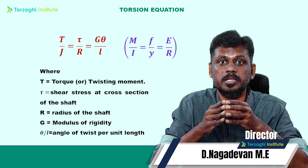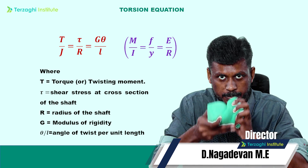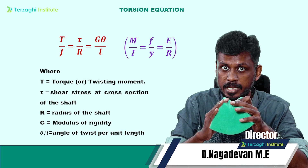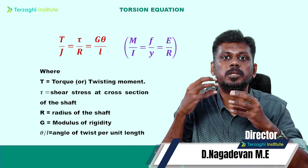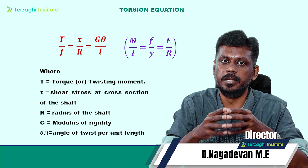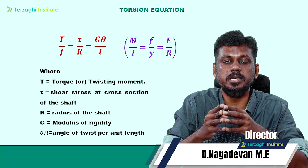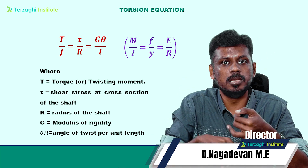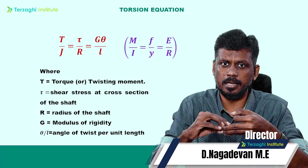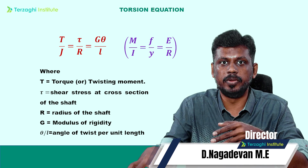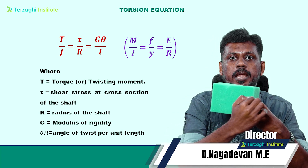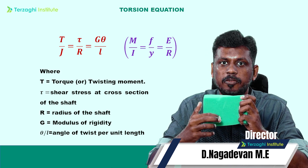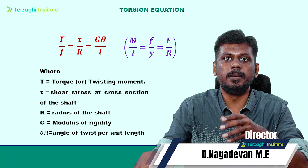Next, tau by R — tau is the shear stress. When a member is in torsion, the applied torque produces shear stress. Bending applies bending stress; torque applied in torsion applies shear stress. R is the radius, G is the shear modulus. G theta by L — theta is the angle of twist, and L is the length of the shaft.